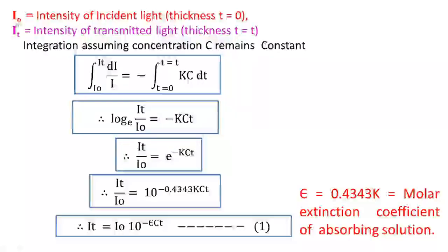If I0 is the intensity of the incident light before passing through the solution, that is when the thickness of the solution t equals 0, and It is the intensity of the transmitted light, that is the intensity of the light after passing through the solution having thickness t.